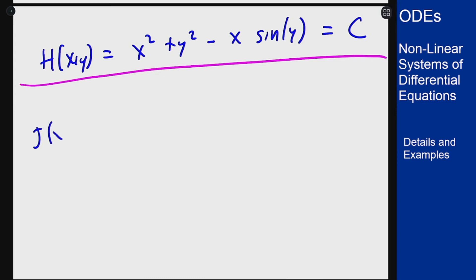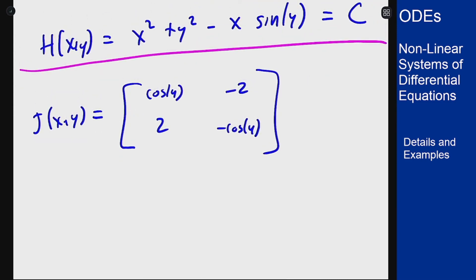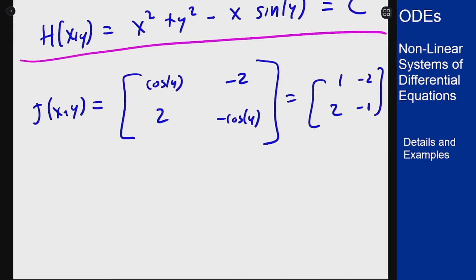So our Jacobian here will be, which looks like this. And now if I plug in my points here I'm plugging in zero zero, cosine of zero is one, and with the matrix one minus two, two minus one, I can look for eigenvalues and eigenvectors here. This gets me a lambda squared plus three equals zero. So lambda is plus or minus three i.